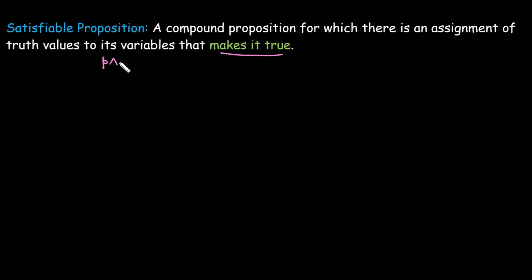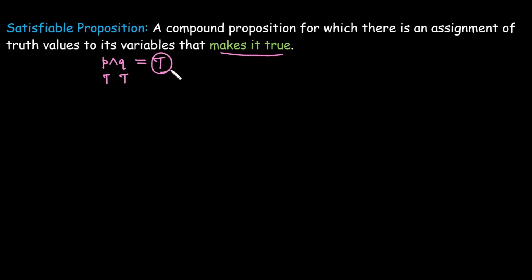For example, 'P and Q' — we check whether there exists any value of P and Q such that the statement is true. If there exists any case for which the statement is true, it is satisfiable. Similarly, 'P or negation P' is satisfiable because it is true in every case. We need only one true value, and here we are getting true in each and every case.